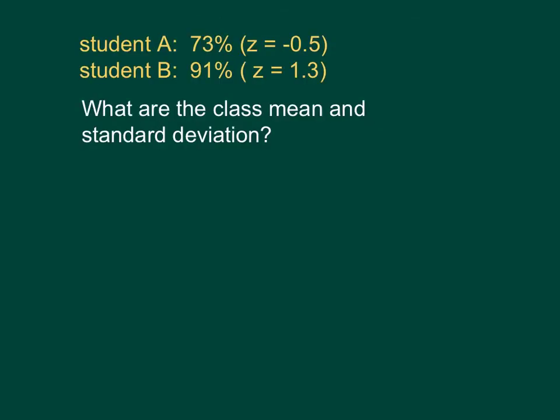Let's add one more wrinkle to our discussion and see if we can take z-scores and work backwards to figure out a class mean and class standard deviation. We have two students here, one who got a 73% with a z-score of negative 0.5. So that student's equation would be negative 0.5 equals 73 minus the unknown mean divided by the unknown standard deviation.